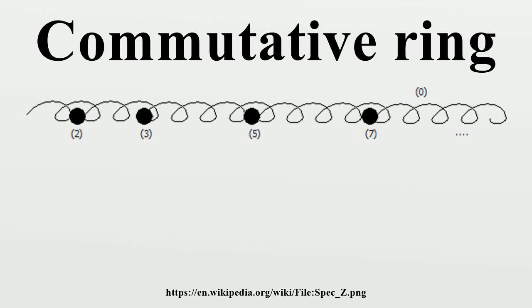In ring theory, a branch of abstract algebra, a commutative ring is a ring in which the multiplication operation is commutative. The study of commutative rings is called commutative algebra. Some specific kinds of commutative rings are given with the following chain of class inclusions: commutative rings, integral domains, integrally closed domains, unique factorization domains, principal ideal domains, Euclidean domains, fields, finite fields.